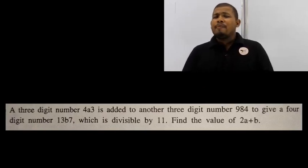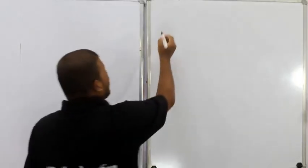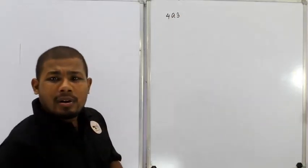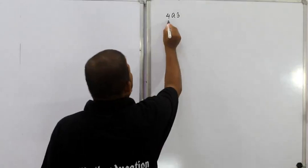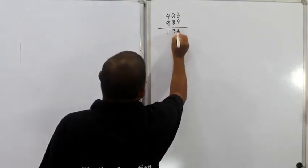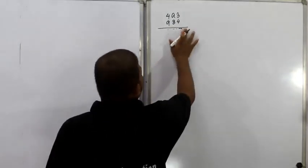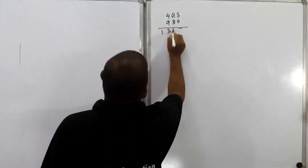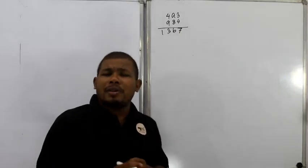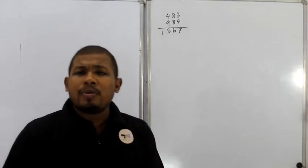What do you need to solve this problem? The problem involves a 4-digit number 4A383. The problem is 984. The problem is 13B7 — a 4-digit number which is divisible by 11.